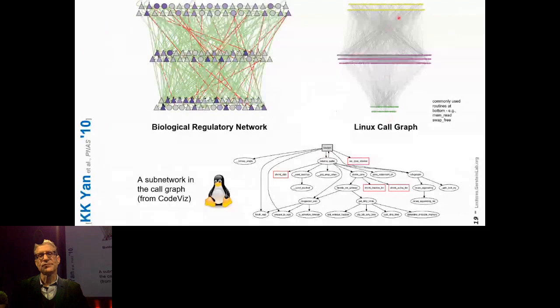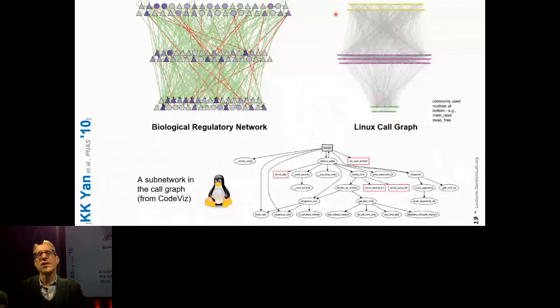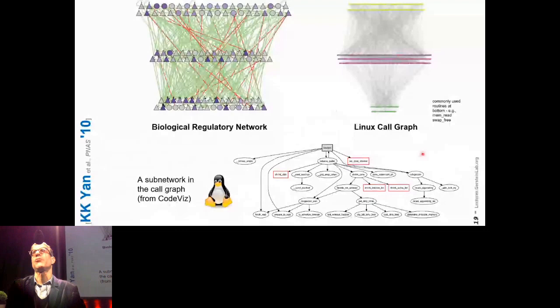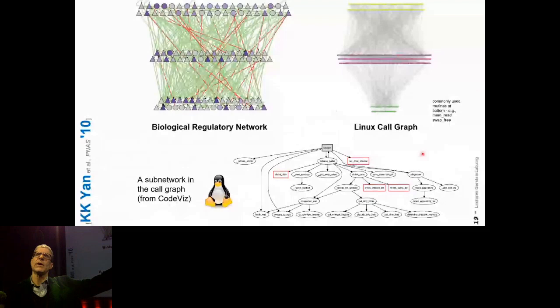If you unfold this network, it looks very different from the regulatory network. It has very few things at the bottom and lots of things at the top. That's because in computer programming there's a small group of routines — like memory handling routines, printing routines — that we call constantly, with many more master control programs. Whereas in the biological network, it's inverted: fewer master control regulators at the top and more things at the bottom.